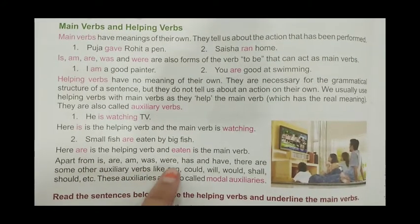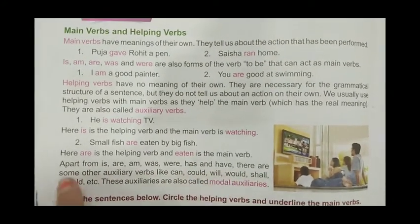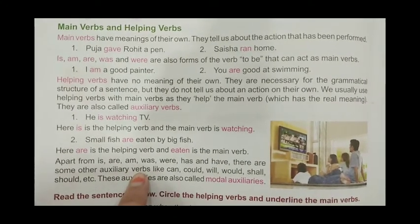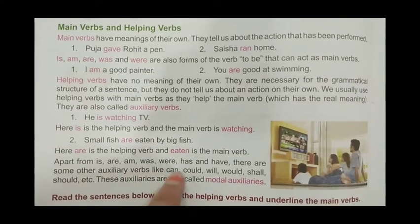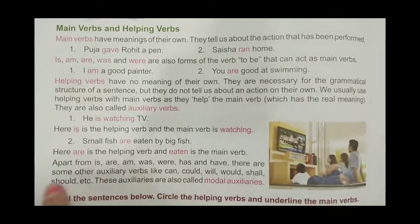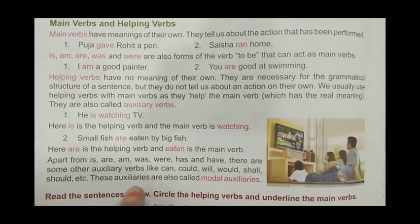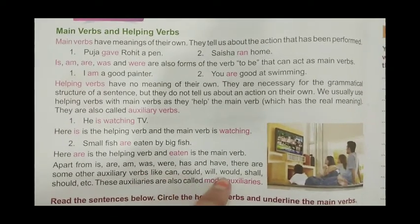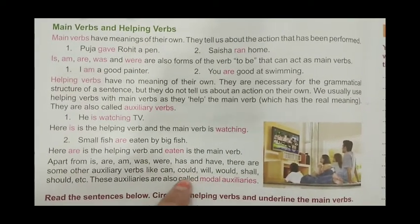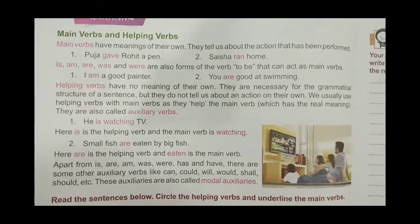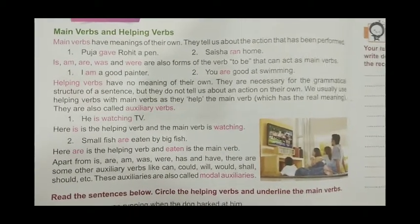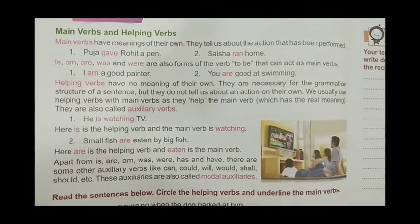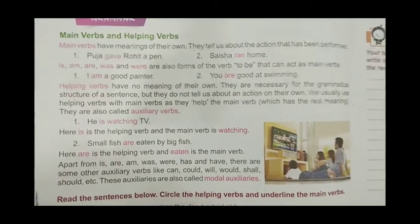Apart from is, am, was, were, has, and have, there are some other auxiliary verbs. Helping verbs mein kya kya aa sakta hai — can, could, will, would, shall, should, etc. These auxiliaries are called modal auxiliaries. Inko modal auxiliaries bhi bolte hain, aur hum isse aur acche se samjhenge while doing the exercise — fill karte time humein aur achhe se in dono ka difference samajh mein aayega.